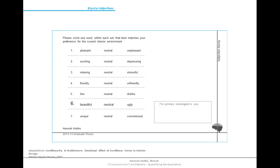Because this was a preference study, preference needed to be defined. Preference was defined by using seven sets of bipolar adjectives with an added neutral between each one. This was the subjective survey each participant filled out to determine their preference for each building after watching the individual walkthrough video. For analysis, the words on the left were given a score of 3 for positive preference, neutral was given a score of 2, and the words on the right were given a score of 1 for negative preference. Therefore, the higher the score, the higher the preference rating.